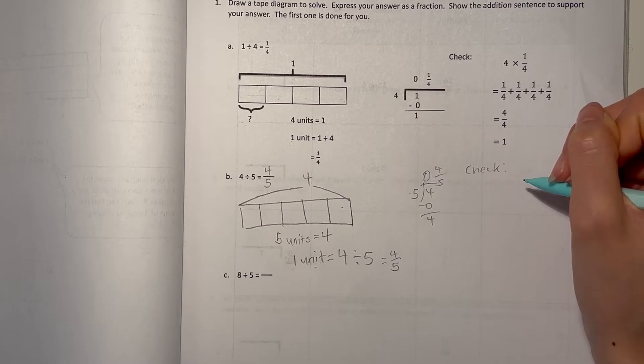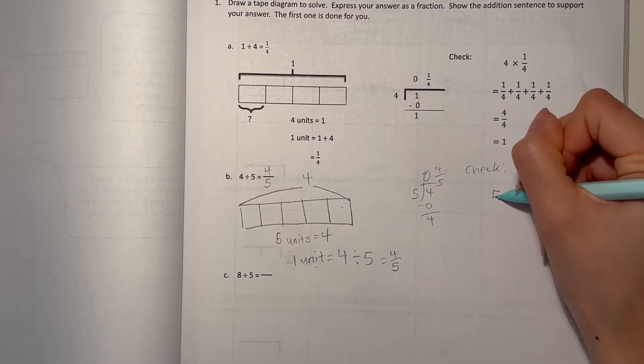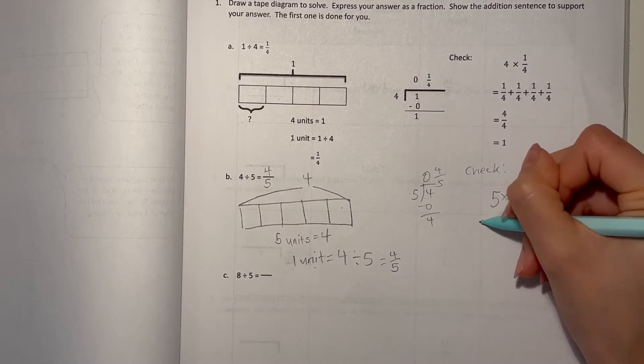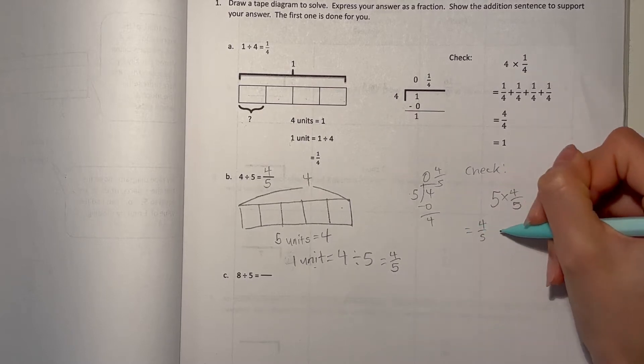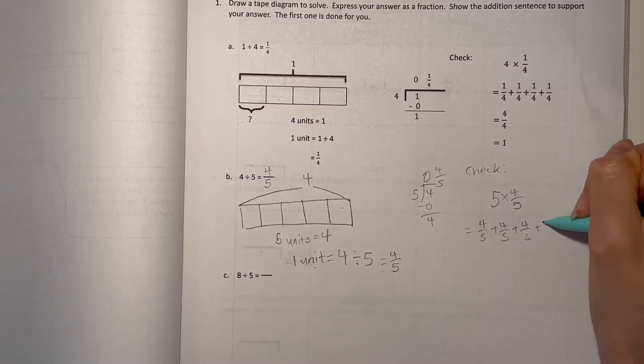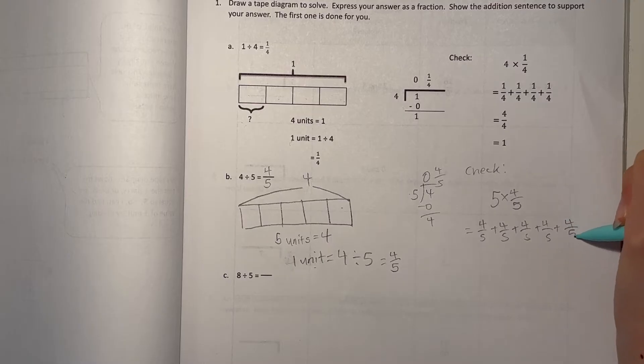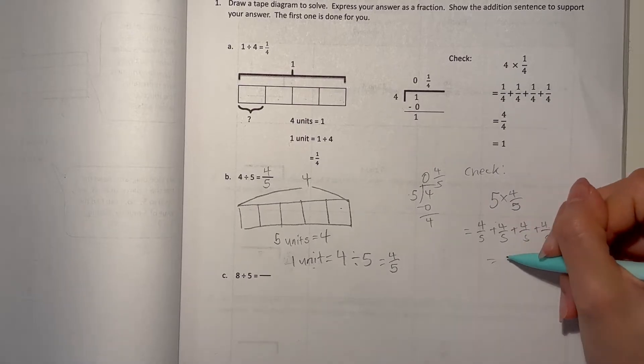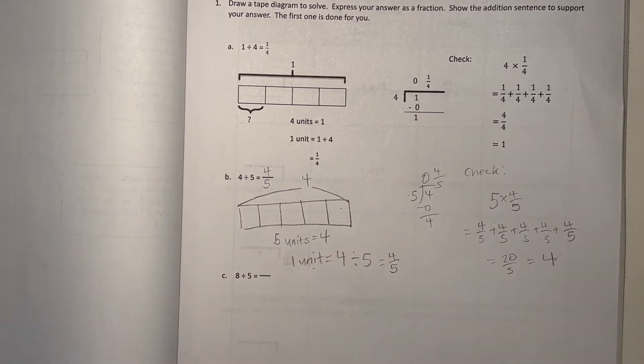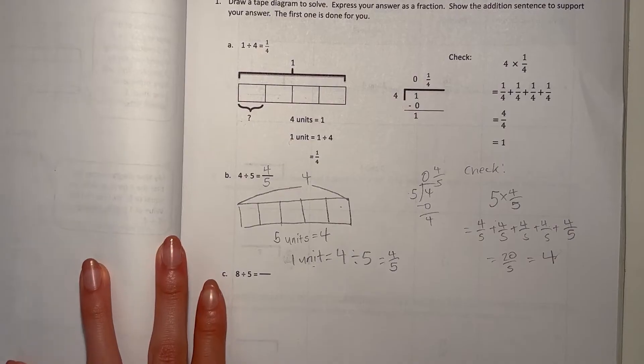So let's see. We do 5 times 4 fifths. That's 4 fifths, plus 4 fifths, plus 4 fifths, plus 4 fifths, 5 times. That's 4, 8, 12, 16, 20. 20 fifths, which is 4. So that is our original number. So our answer matches up.